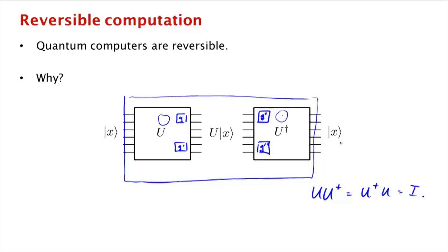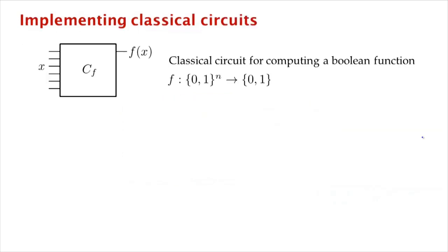So that's what we mean by saying quantum computers are reversible: whatever you compute, you can also uncompute by doing the opposite of what you did to get there. Now let's see what this means when you're trying to implement a classical circuit. A classical circuit might take n bits as input, output one bit, computing some boolean function f on input x.